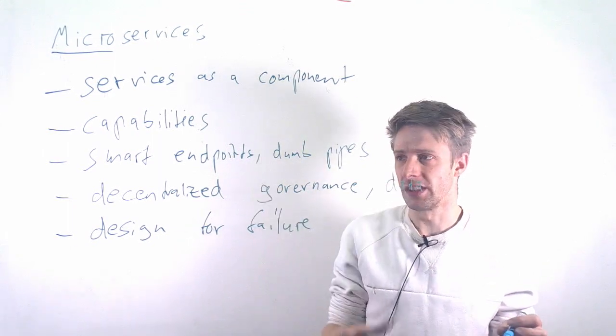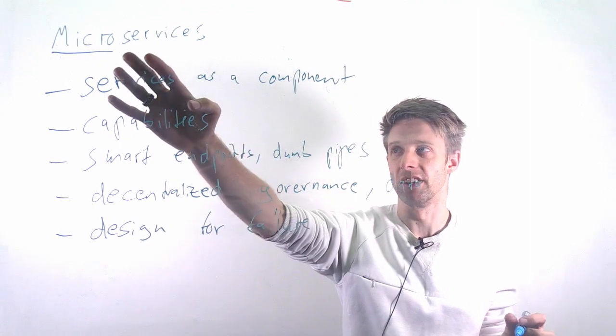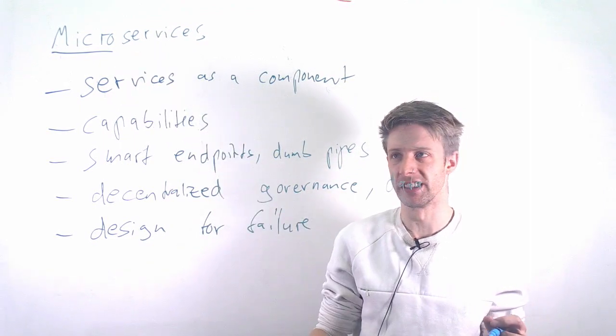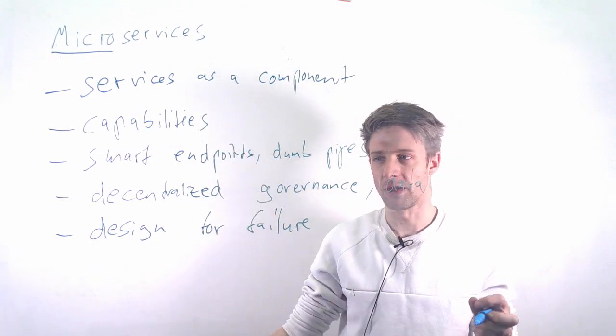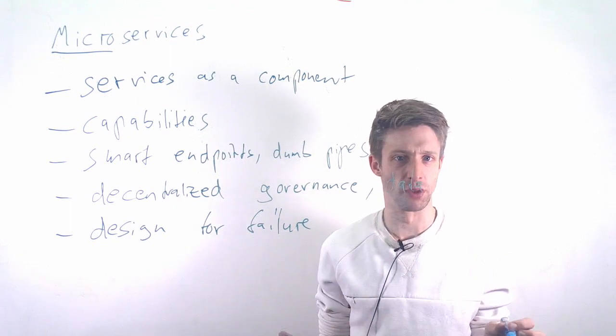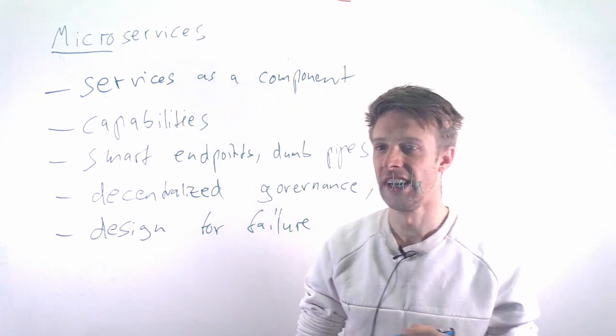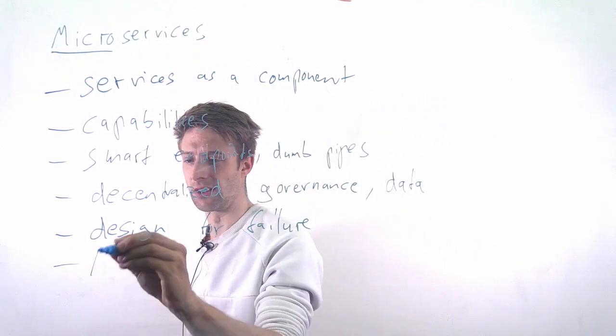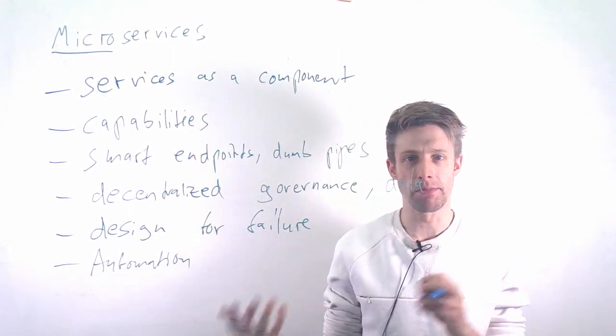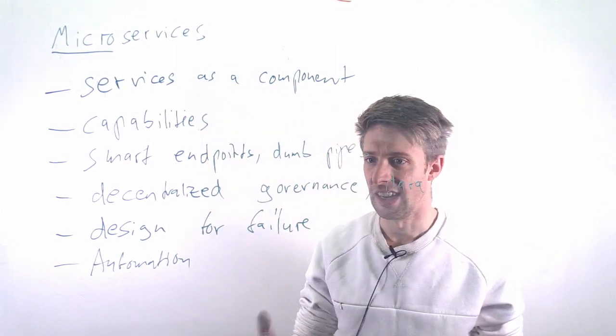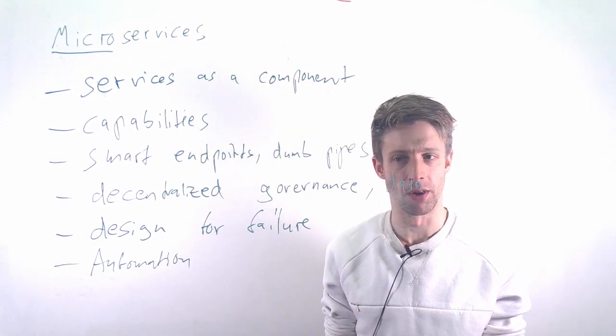So this overall concept is very impressively demonstrated for example at Netflix, where you have a huge amount of small microservices, you have tests that take services, crash them essentially and see whether the system recovers from it. So there is a very large focus on design for failure and there is a large focus on automating, for example testing, automating feedback from users and all the infrastructure that you need. Automated builds, automated deployment.